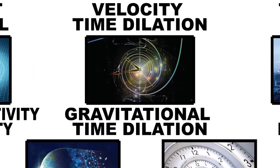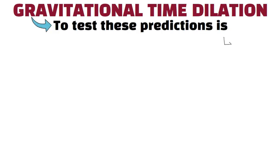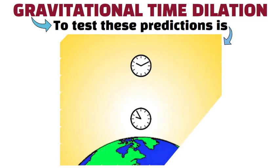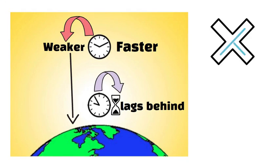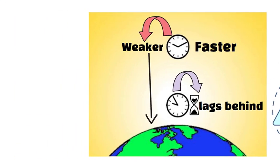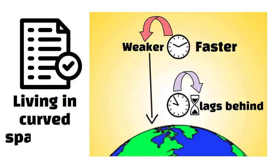Gravitational Time Dilation. One way to test these predictions is to place synchronized atomic clocks at different altitudes. The clock higher up experiences weaker gravity and runs a bit faster. Over time, the lower clock lags behind. This difference doesn't come from any mechanical issue. It's a fundamental result of living in curved space-time.